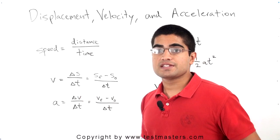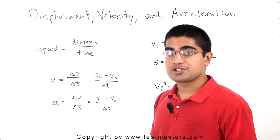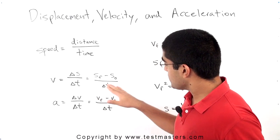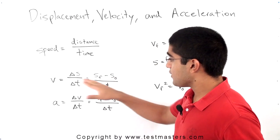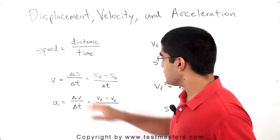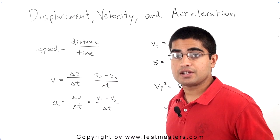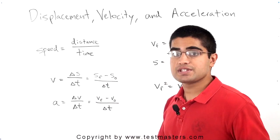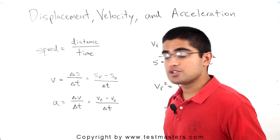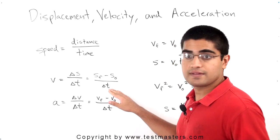Now, delta is simply a Greek letter that means change in. So in this case, we have change in displacement, or the final displacement minus the initial displacement, or the final position minus the initial position, divided by the change in time.